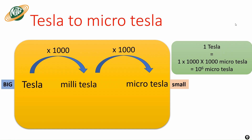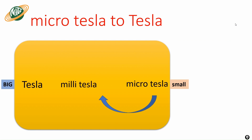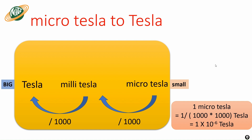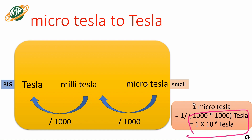Now let's do it the other way around — how do I convert microtesla to tesla? To convert microtesla to millitesla, divide by one thousand; and then millitesla to tesla, divide by one thousand again. So one microtesla equals one divided by one thousand times one thousand — that's one times ten to the power minus six tesla.